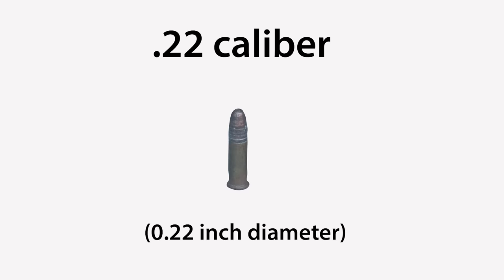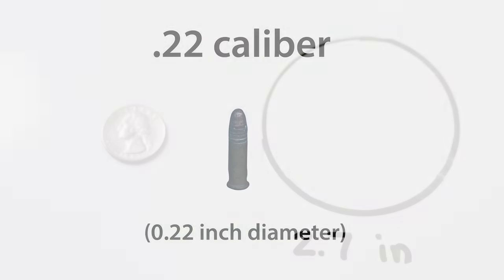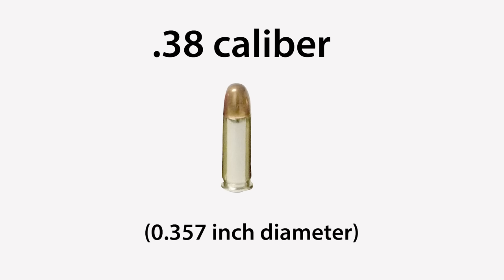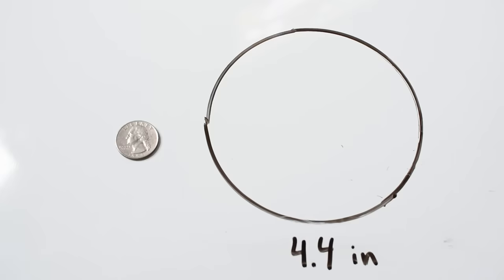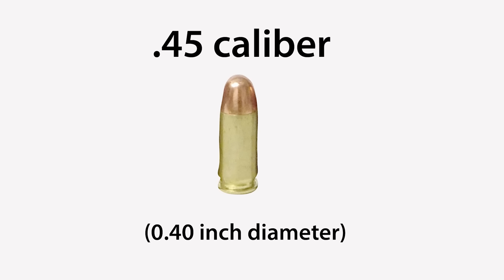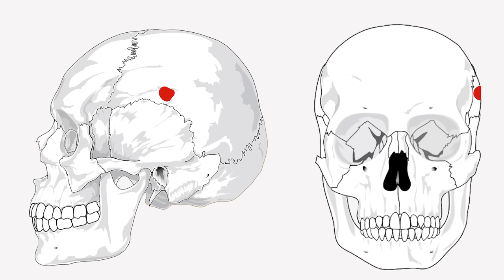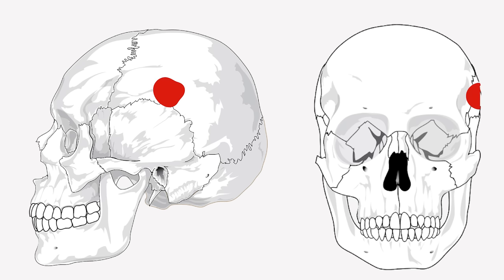For instance, a .22 caliber bullet produces a wound of 2.7 inches, a .38 caliber bullet creates a 4.4 inch wide wound, and a .45 caliber bullet creates a 5 inch wide wound. Though it's very short, the expanded cavity does a remarkable amount of damage to the skull.